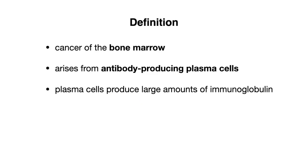So what is multiple myeloma? This is a cancer of the bone marrow and it arises from antibody-producing plasma cells. The problem here is that the plasma cells produce large amounts of immunoglobulin, which can lead to a wide variety of signs and symptoms.